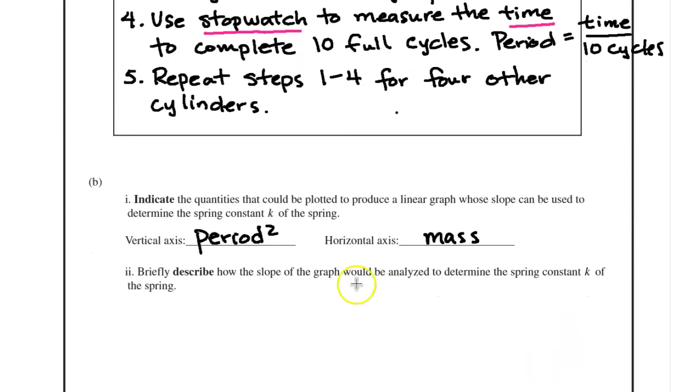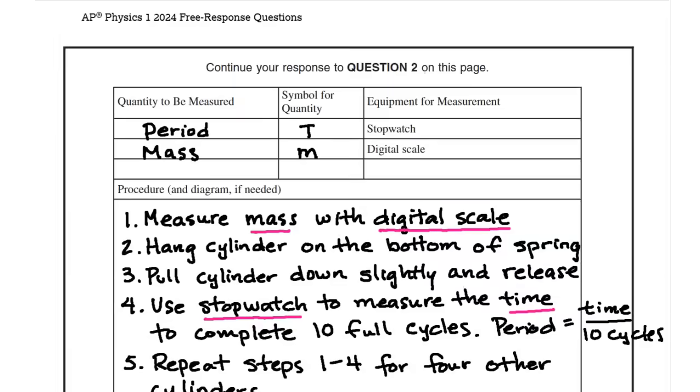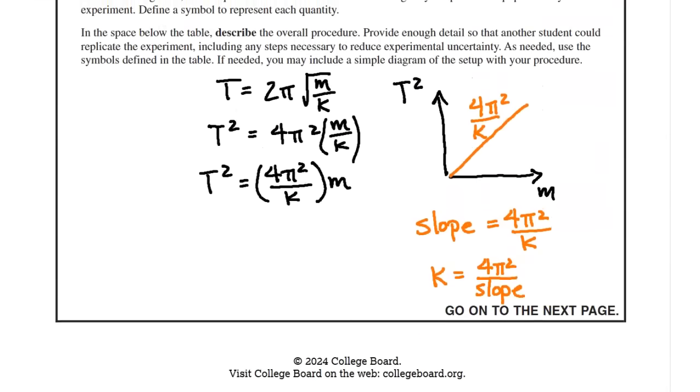Okay, so part B, indicate the quantities that could be plotted to produce a linear graph whose slope can be used to determine the spring constant K of the spring. So on the vertical axis, I'm going to graph period squared. On the horizontal axis, I'm going to graph the mass. And 2i says briefly describe how the slope of the graph would be analyzed to determine the spring constant K of the spring. So I did that earlier in the video right here. So the slope is going to represent 4π² over K. And then so I can calculate K by calculating 4π² divided by the slope.